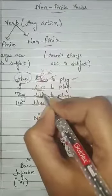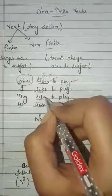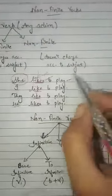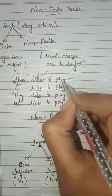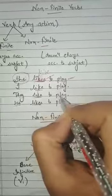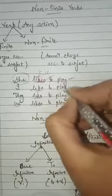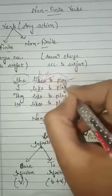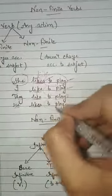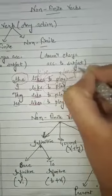A finite verb changes according to the subject — if the subject is singular it has one form, and if plural it changes accordingly. But notice 'to play' — 'play' is also a verb, also an action. 'To play' is not changing here whether we use a singular or plural subject. So 'to play' is a non-finite verb.